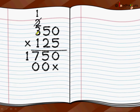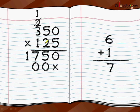2 multiplied by 3 is 6, plus 1 carry over is 7 — not 6 plus 2, because the 2 was from the previous multiplication. 2 multiplied by 5 gave 10 and 1 went as carry over. So 2 multiplied by 3 is 6, plus 1 is 7. We write 7 here. So 350 multiplied by 2 is 700.